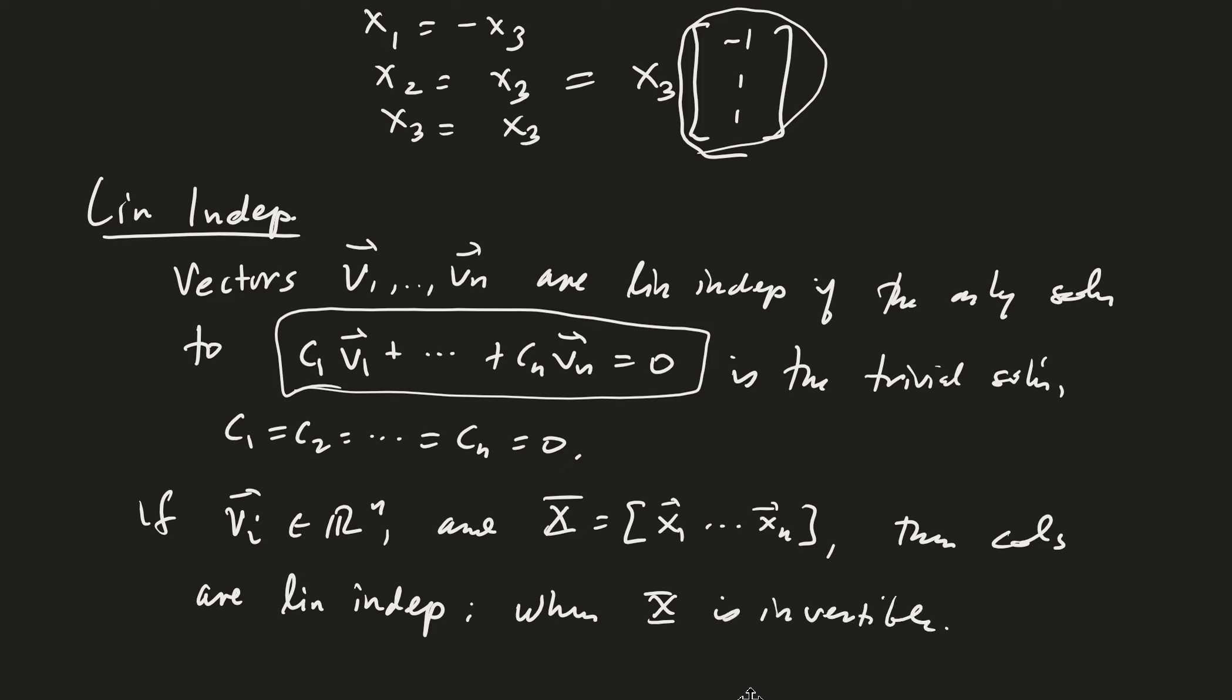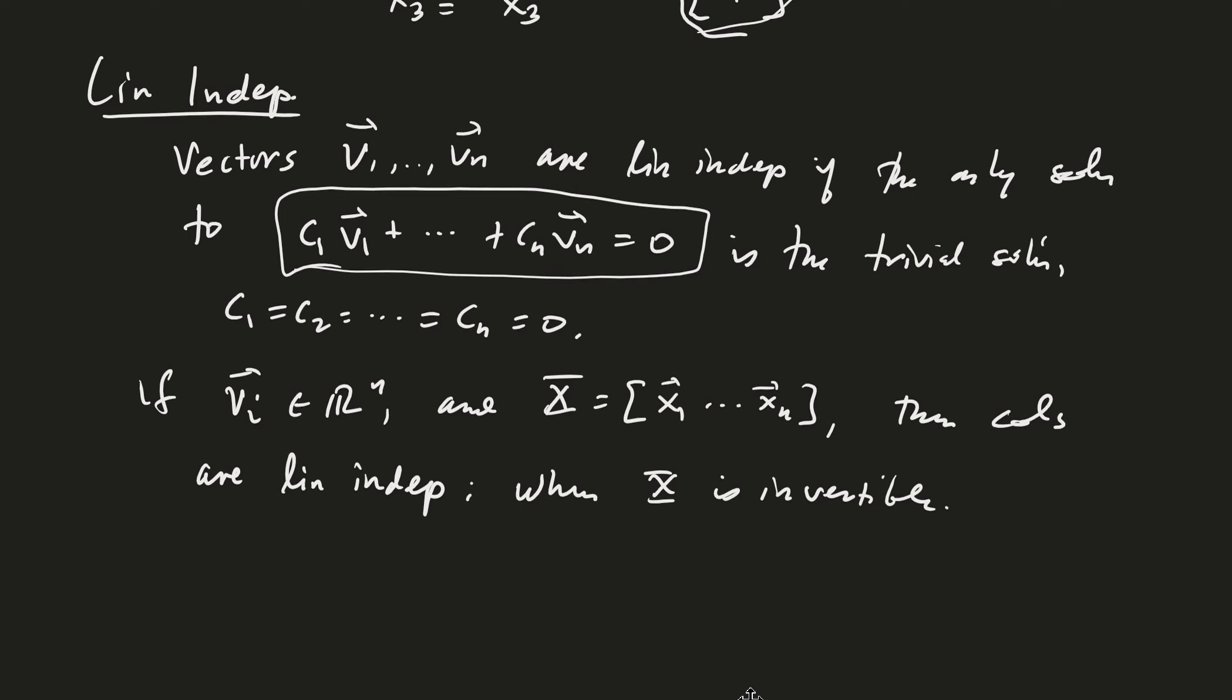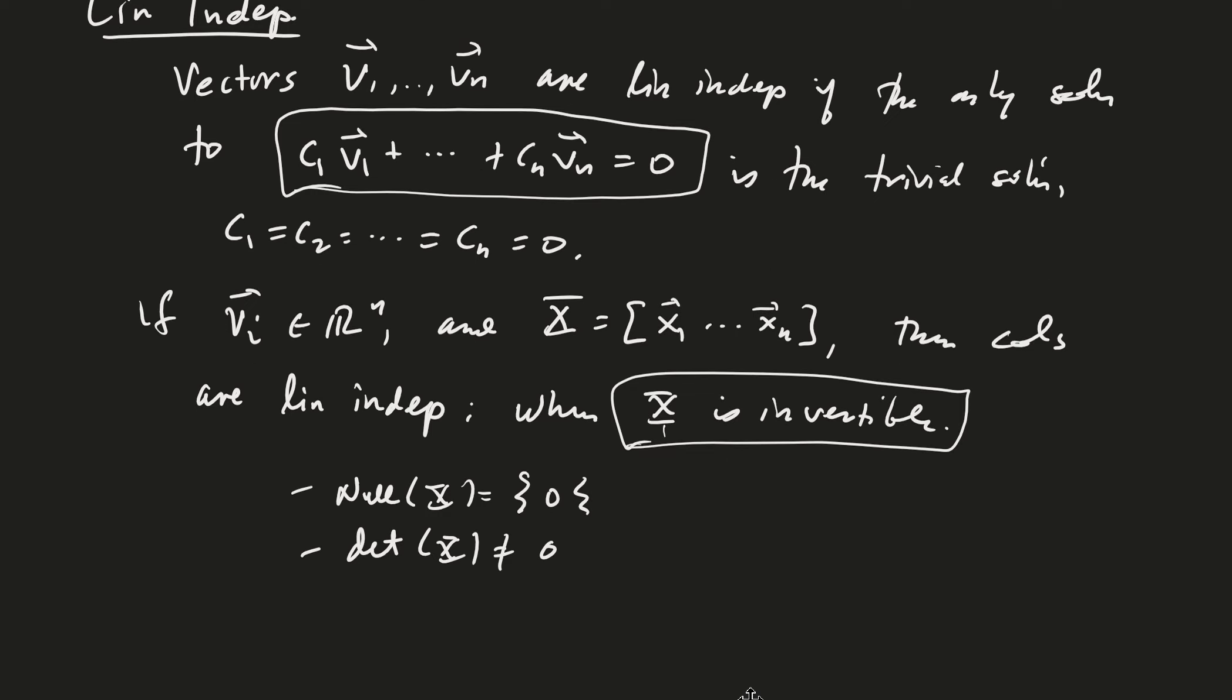And I bring this up here now because we have, do you remember the invertible matrix theorem? There's like 30 other components to invertible matrix. Good. So, for example, one of them would be that the null space of x was just zero. One would be, let me just write down a few. Null space of x equals zero. The determinant of x is not equal to zero. What are some others?